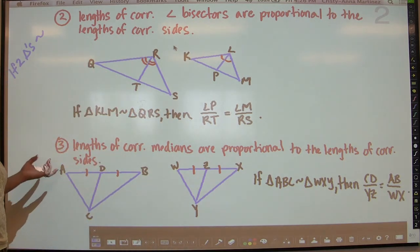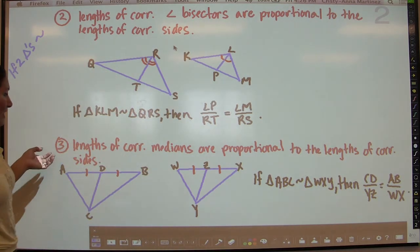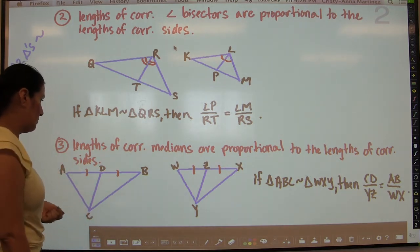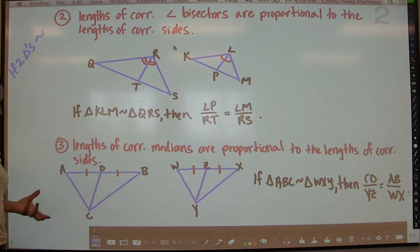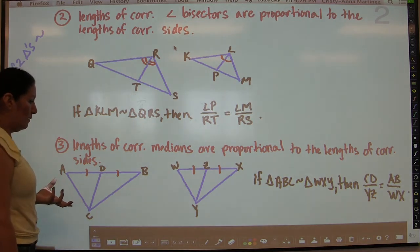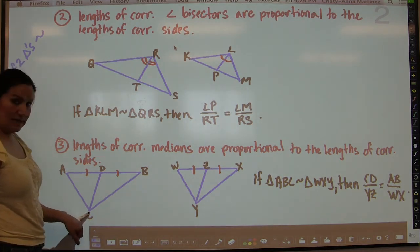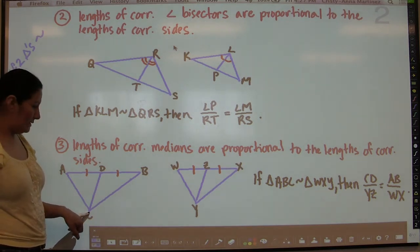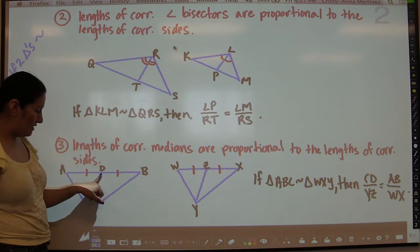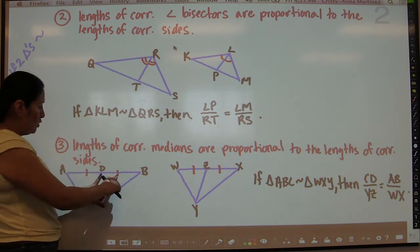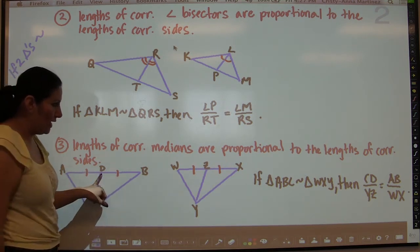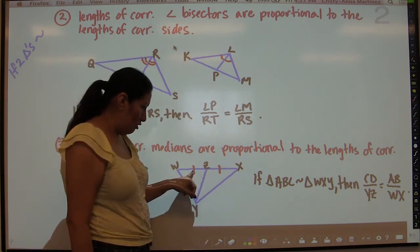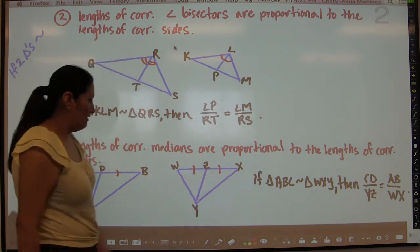Lastly, if two triangles are similar, then the lengths of corresponding medians are also proportional to the lengths of corresponding sides. A median — if you remember — is not an altitude. It goes from a vertex to the midpoint of the opposite side. Point D is the midpoint because those two sections are marked congruent, and Z is the midpoint in the other triangle for the same reason.